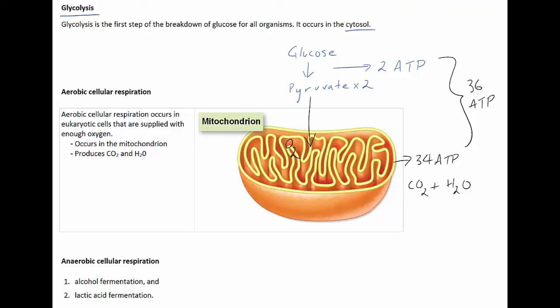Eukaryotes have also evolved a way of producing energy through anaerobic respiration and the two most common forms of anaerobic cellular respiration in eukaryotes are alcohol fermentation and lactic acid fermentation.